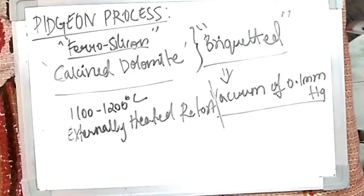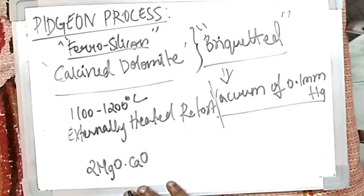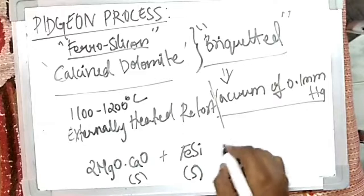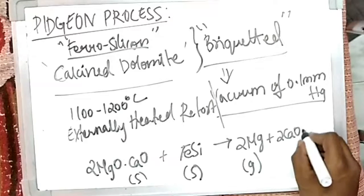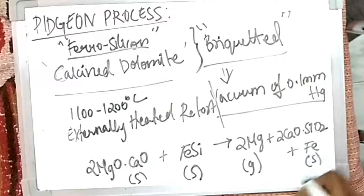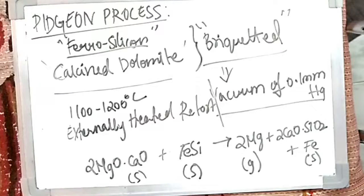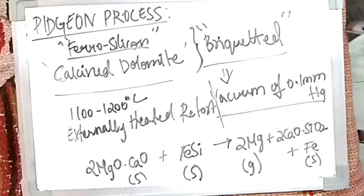The reaction in the Pidgeon process: the calcined dolomite (solid) reacts with ferrosilicon (also solid) to give 2Mg vapor, plus calcium silicate and some amount of iron. This is the reaction involved in the Pidgeon process — the calcined dolomite is briquetted together with FeSi (ferrosilicon) to produce magnesium in gaseous vapor form.